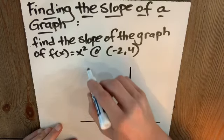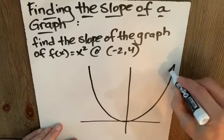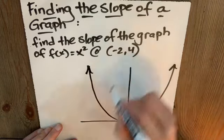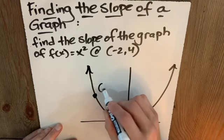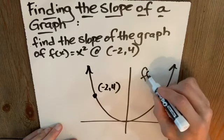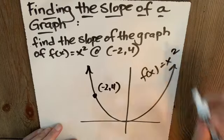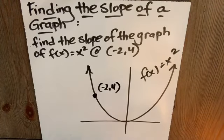Well, if I'm looking at this, here's my graph, and here's the point negative 2, 4. This is f of x equals x squared. Notice how good I am knowing my parent functions.